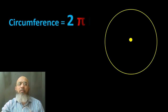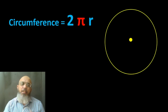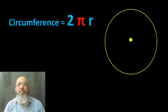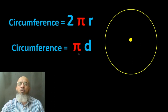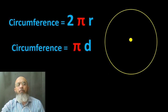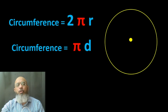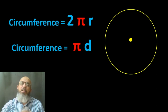Now you understand where the value of pi comes from. The formula for circumference when radius is given is 2 × π × r, and when diameter is given it is π × d. The value of pi is 3.14 in decimal form, or 22 over 7 as a fraction. In your questions, the book or examiner will tell you which value to use. If no value is specified, you may use either.